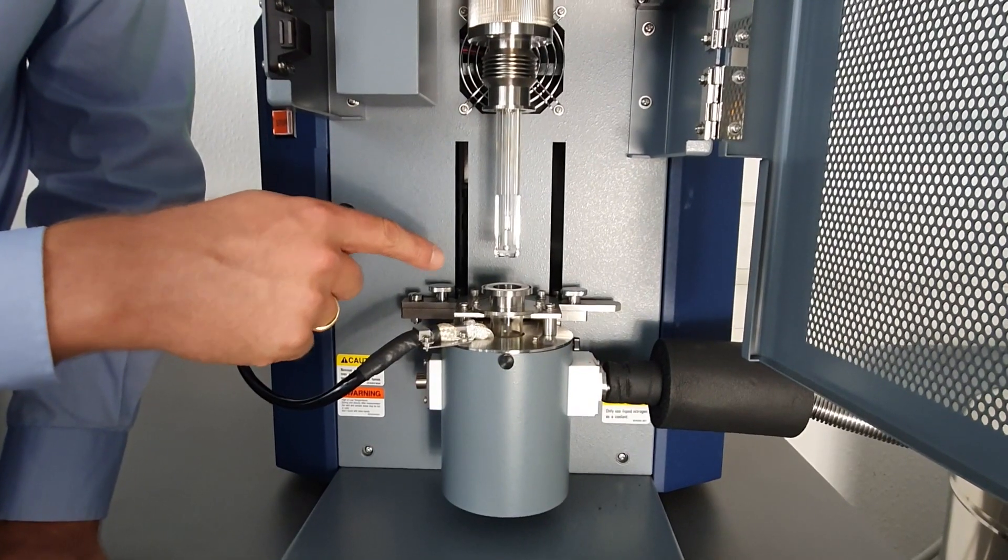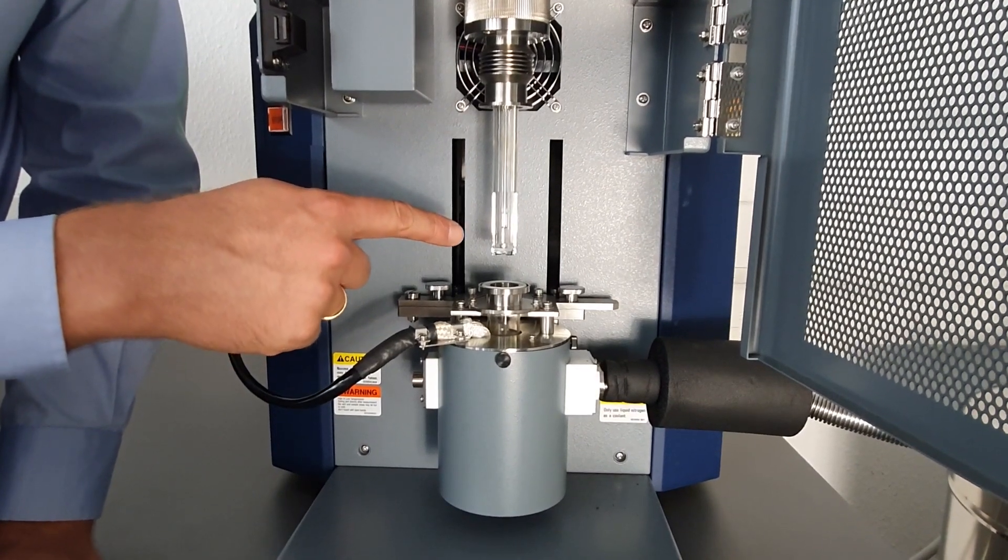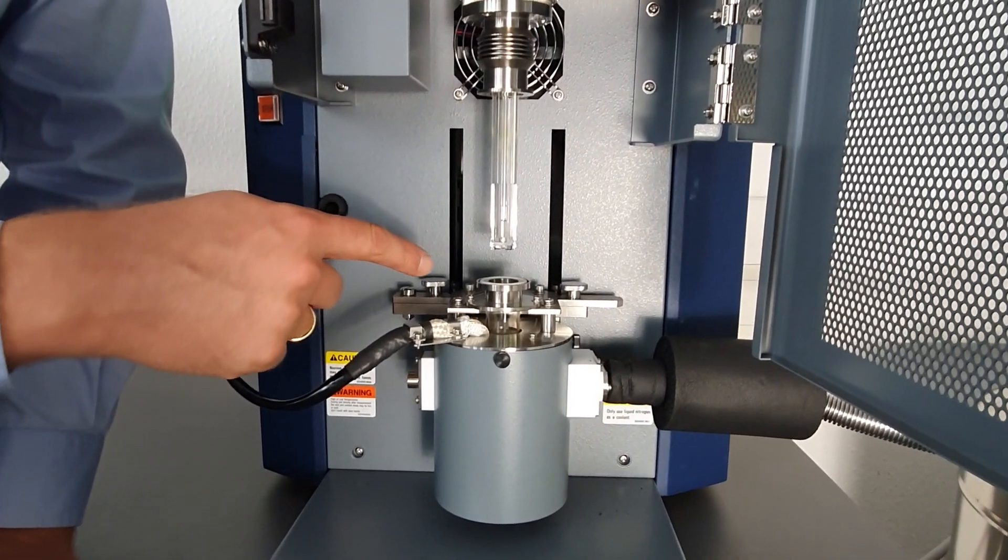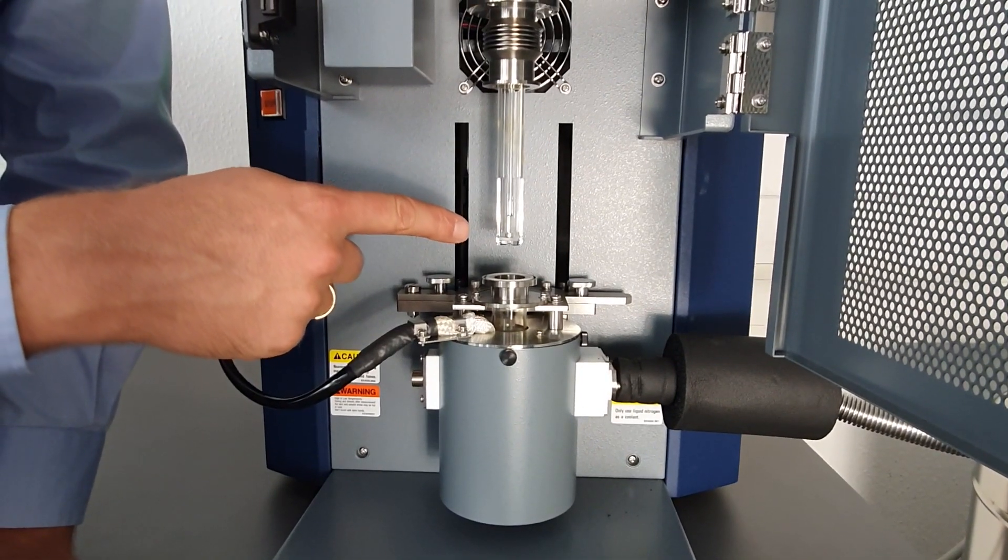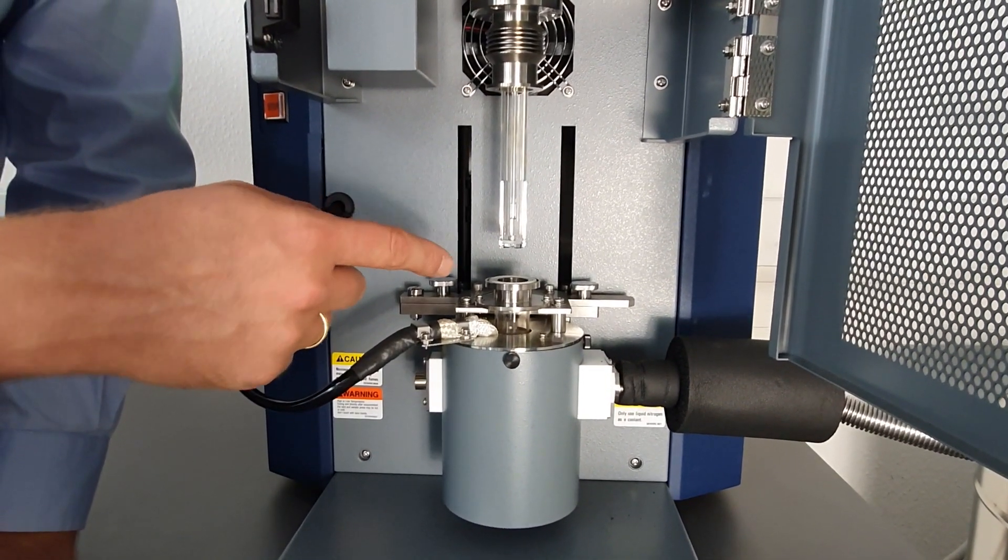Here you can see a typical sample holder and measurement probe for an expansion measurement. The sample holder and measurement probe is made of quartz glass and can be used, for example, to analyze some polymers.